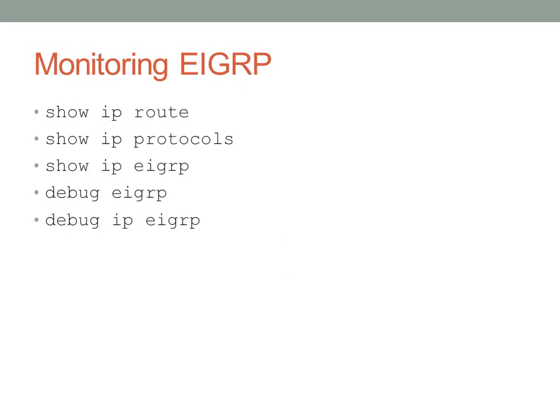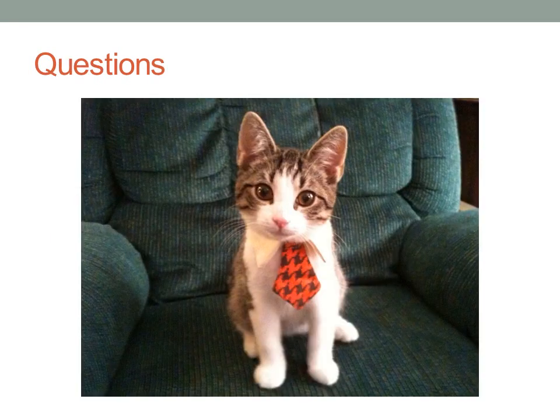To monitor EIGRP, use 'show ip route' and 'show ip protocols'. There are several 'show ip eigrp' commands to be familiar with, as well as 'debug eigrp' and 'debug ip eigrp' for real-time monitoring. That wraps up EIGRP. It's a significant routing protocol with many technicalities relevant to the CCNA, so read the book, do some labs, and leave any questions or comments below.